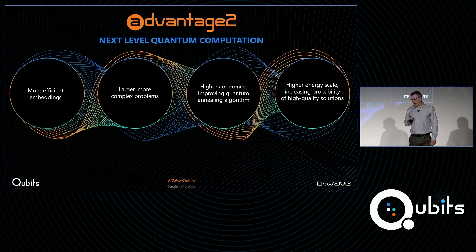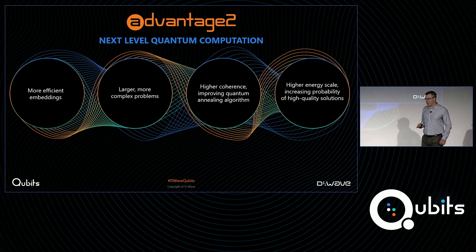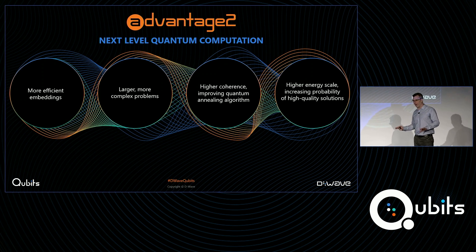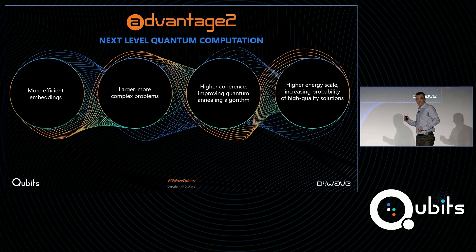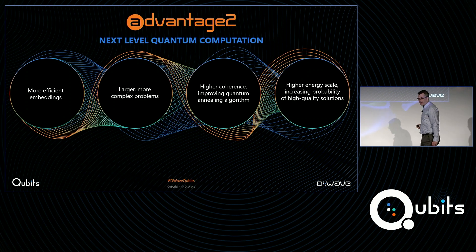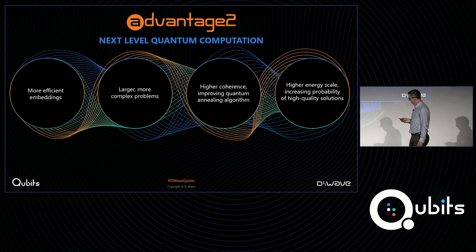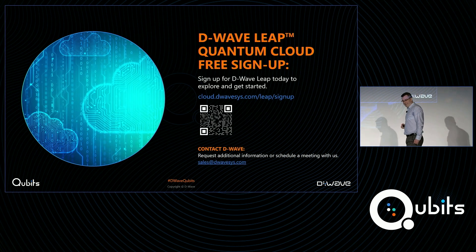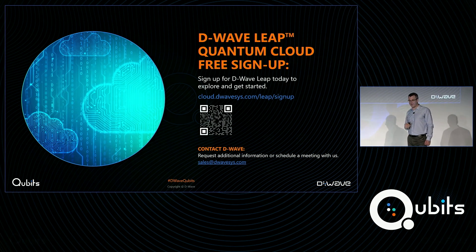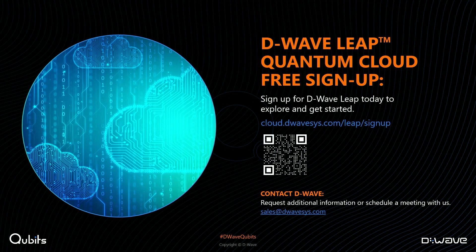Advantage 2 is all about taking quantum computation to the next level, following the path we've laid the foundation for — continuous scaling of this technology to more and more powerful processors solving more and more complex problems. You can test out these processors for yourselves on the Leap system. Thank you.